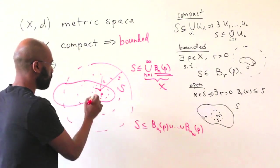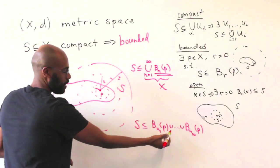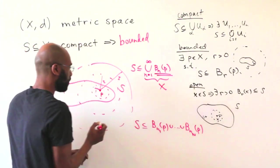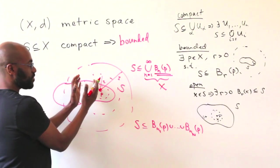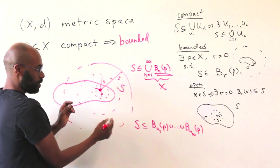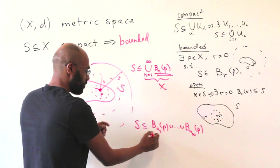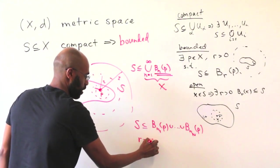Now these are all balls of radius N1, N2 up to N sub capital N respectively centered around this point P. Right, so if we order them by radii, whatever the largest is, let me call it R, being the maximum of all these radii.